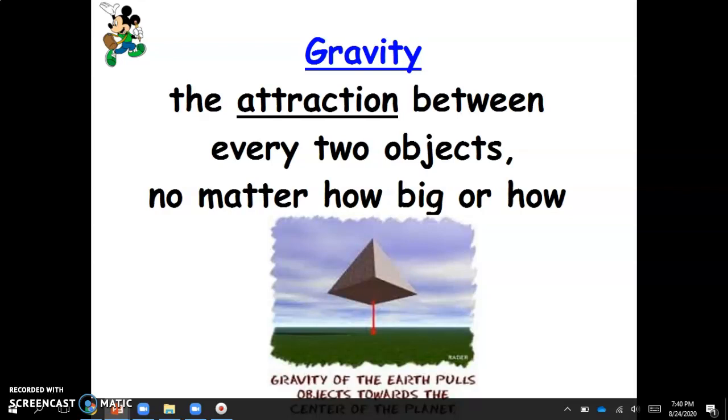Well, first of all, gravity is the attraction between every two objects, no matter how big or how small. So gravity works on all of us. If we look at this pyramid here, it says gravity of the Earth pulls objects towards the center of the planet because that's where the center of the mass is. So the reason that we don't float off into space is because gravity pulls us to the center of the planet. When astronauts leave the atmosphere and they go into space, they escape Earth's gravity. So that gravity does not work on them anymore and it doesn't pull them down. And so they can float in their spaceships because there's no gravity there.